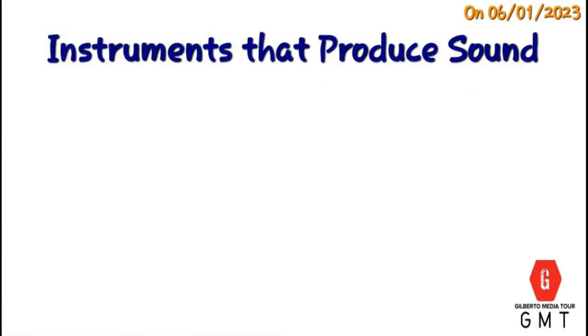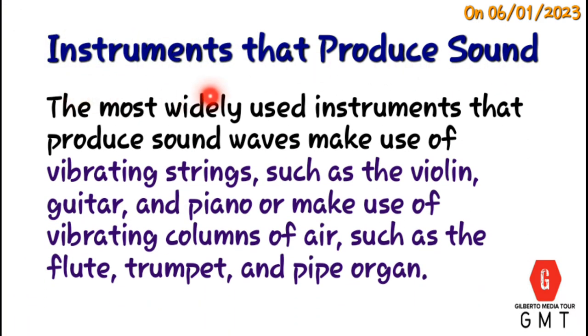Instruments that produce sound. The most widely used instruments that produce sound waves make use of vibrating strings, such as violin, guitar, and piano, or make use of vibrating columns of air, such as flute, trumpet, and pipe organ.